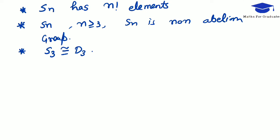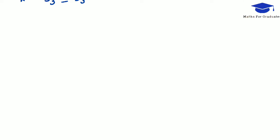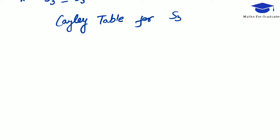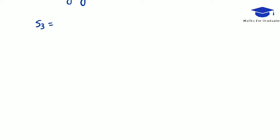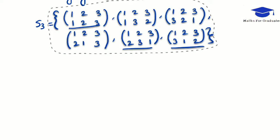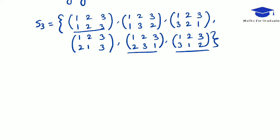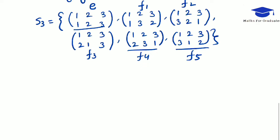Now let us form a Cayley table for S3. S3 is given by its six elements, which we will call E, F1, F2, F3, F4, and F5.